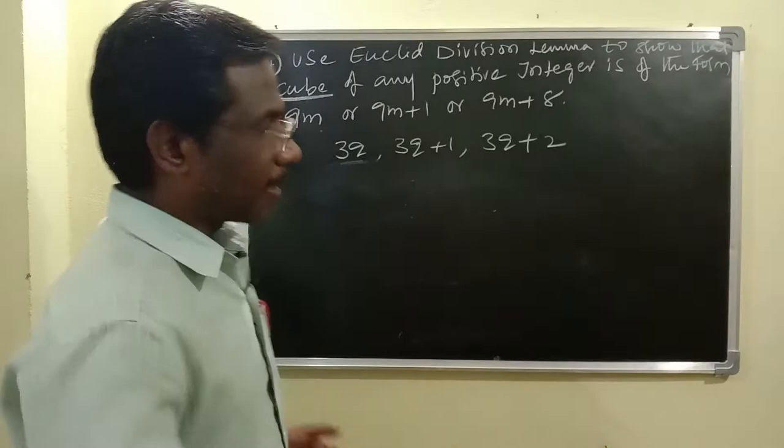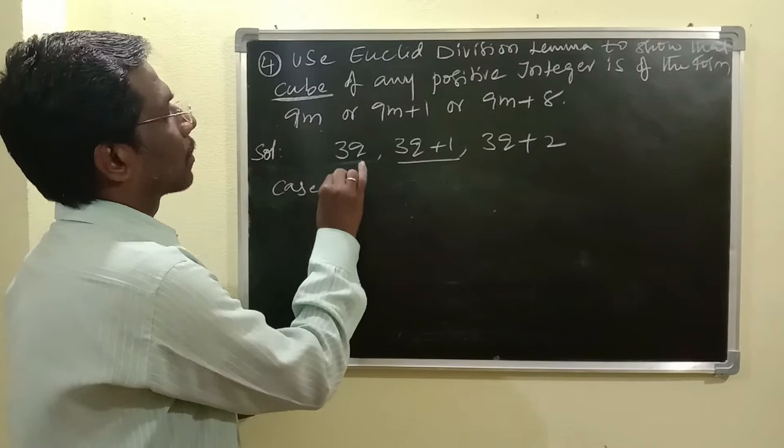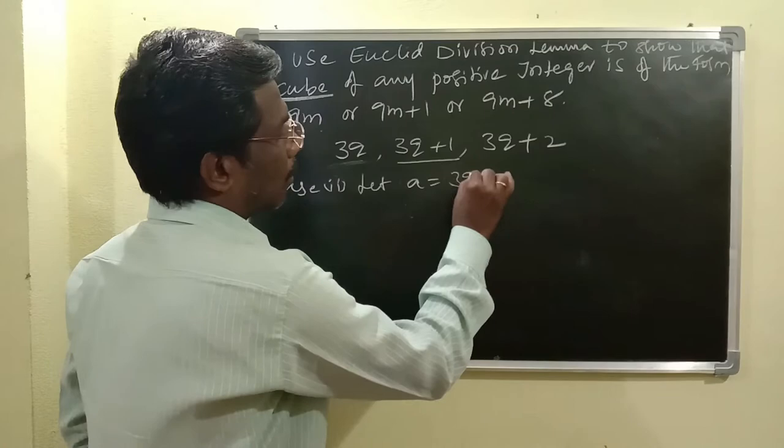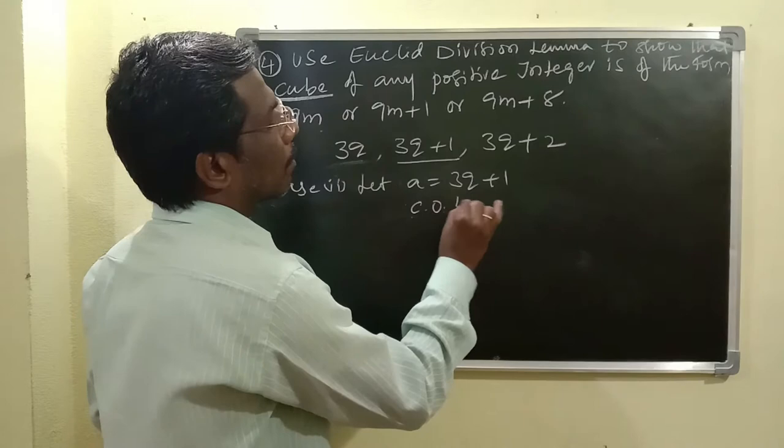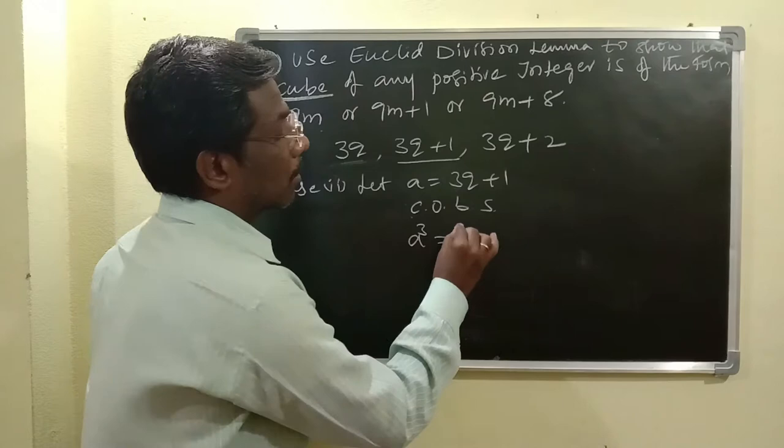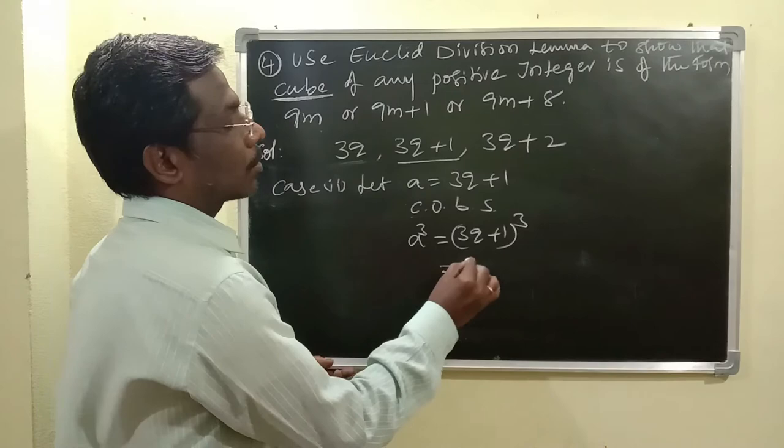Case 2: Let A equals 3Q plus 1. Doing cubing on both sides, A cubed equals 3Q plus 1, whole cube.